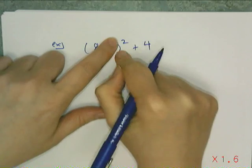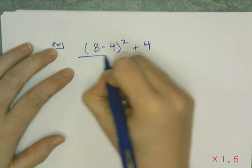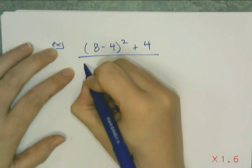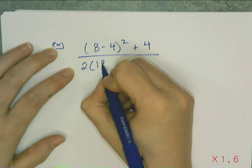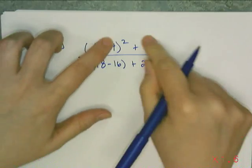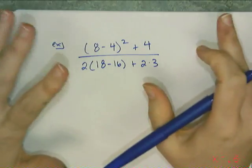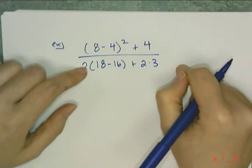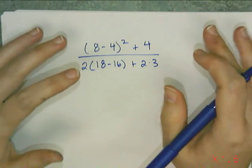I'm going to take one very simple order of operations problem. 8 minus 4 quantity squared plus 4. And I'm going to make it the numerator of a bigger problem. And I'm going to put in the denominator another order of operations problem that's very simple. And what this does is it creates a problem that looks horrible. You're like, oh, no, that's horrible.